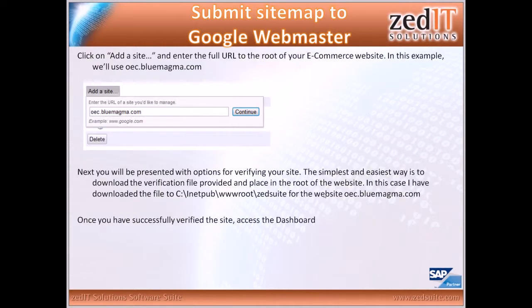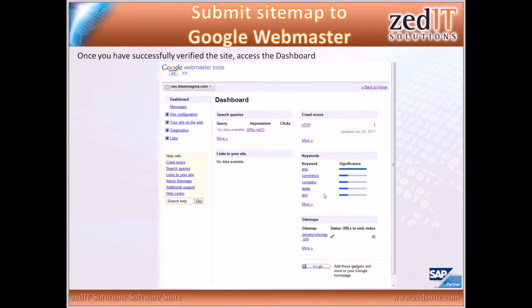The webmaster program needs to verify that you have ownership over the URL. Click on 'Add a Site' and enter the full URL to the root of your e-commerce website. I'm going to use oec.bloomagma.com, which is one of our testing sites. The simplest way to verify is to download the file and place it into the root of the website — in this case, inetpub/wwwroot/zed suite, which is the folder location for oec.bloomagma.com.